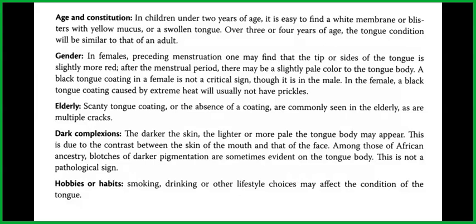Gender: in females preceding menstruation, one may find that the tip or sides of the tongue is slightly more red. After the menstrual period, there may be a slightly pale color to the tongue body. A black tongue coating in a female is not a critical sign, though it is in the male. In the female, a black tongue coating caused by extreme heat will usually not have prickles.